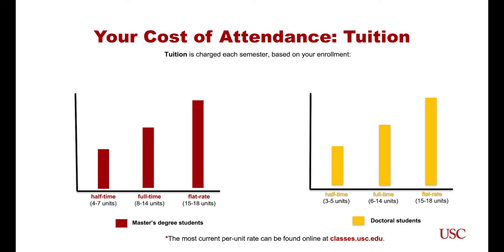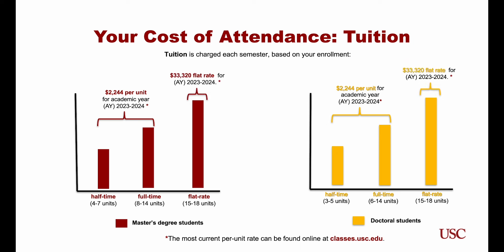Students who are enrolled in up to 14 units will be charged for each individual unit — you will see the current academic year's per unit rate on the slide. Students who are enrolled in between 15 to 18 units will be charged using a flat rate. This academic year's flat rate tuition charge is listed on the screen. You can see what your tuition charge would be if you were enrolled at least half-time for both master's and doctoral students — at least four units for master's students and three units for doctoral students. The screen also shows what you can expect to be charged for tuition for one semester if you are enrolled in 10 units, which is considered full-time for graduate students. Students who are enrolled in 15, 16, 17, or 18 units will continue to be charged the flat rate as long as they stay within the 15 to 18 unit range.